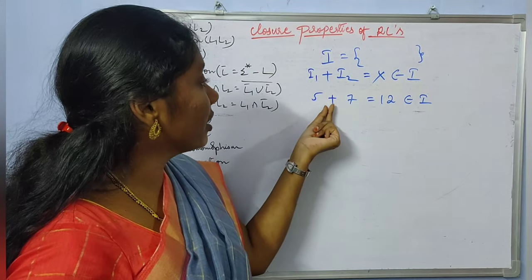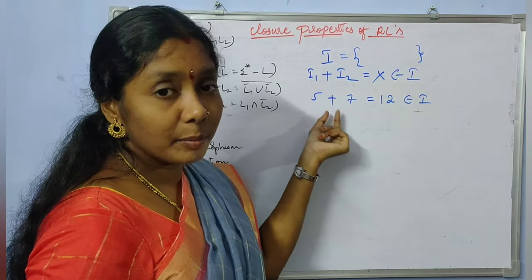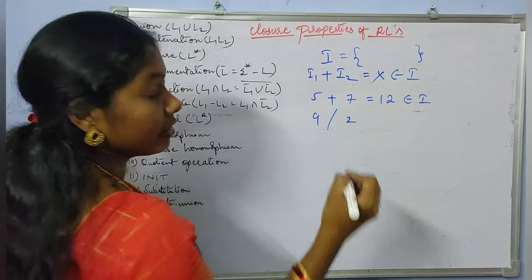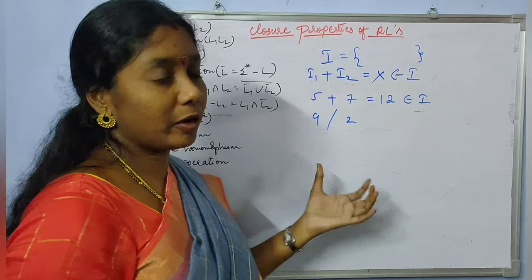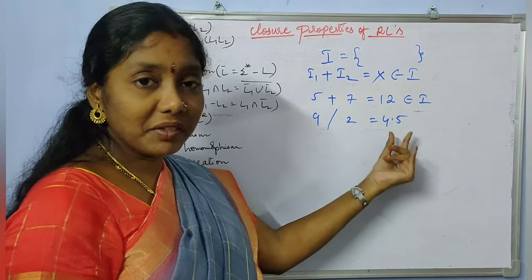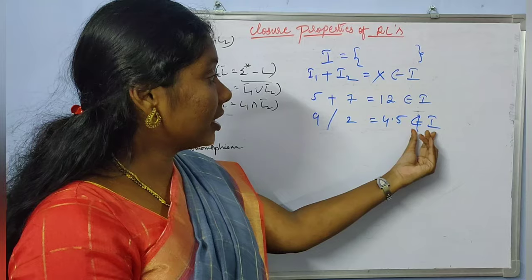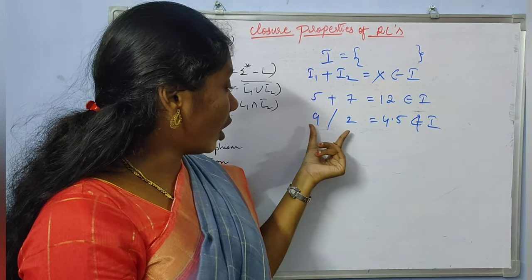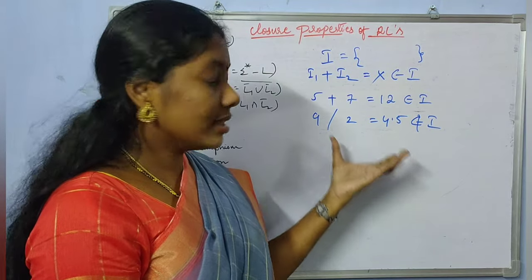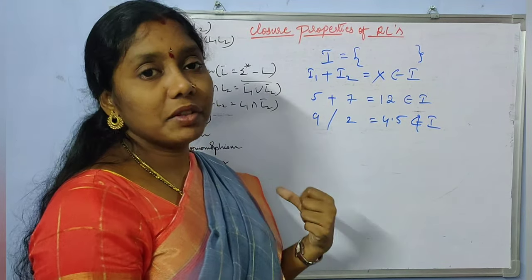Now suppose we have two integers, say 9 and 2, and we perform the division operation. What will be the result? The result is 4.5. Is 4.5 an integer? No, 4.5 does not belong to the integer set. So this set is not closed under the division operator.